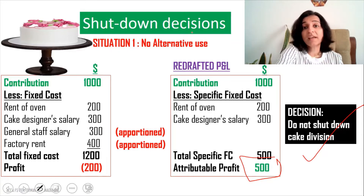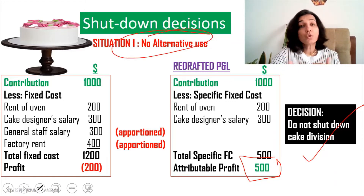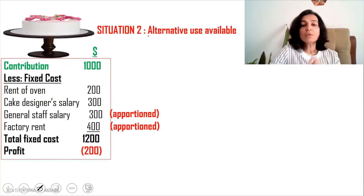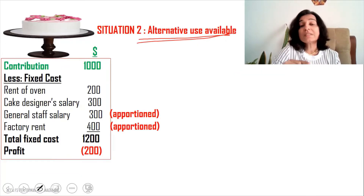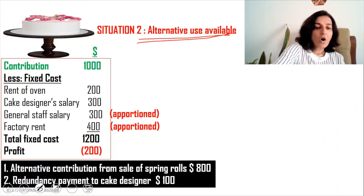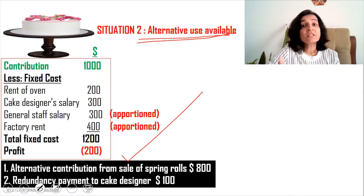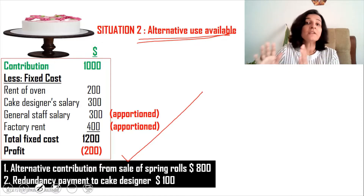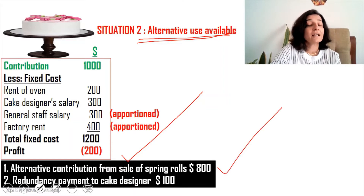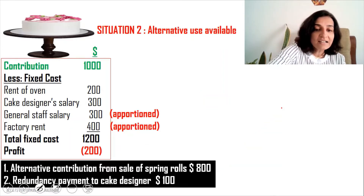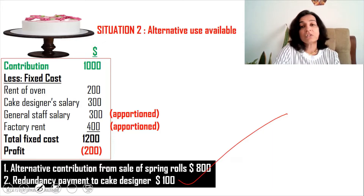That was situation one, where there was no alternative use. Situation two is when alternative use is available. We have two additional pieces of information: first, the alternative contribution from sale of spring rolls is $1,800 — meaning if we stop the cake division, we could use our resources to start a spring roll division. Second, the redundancy payment to the cake designer is $1,100.